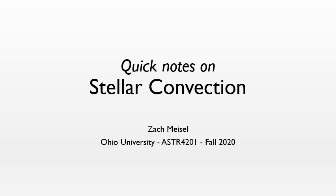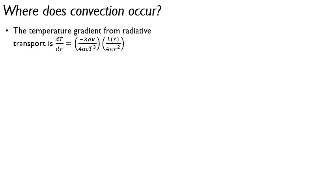Here are some quick notes on stellar convection to accompany Chapter 6 of To Build a Star. We've established that convection occurs where you have a steep temperature gradient in a star. So the question is then where does it actually occur?